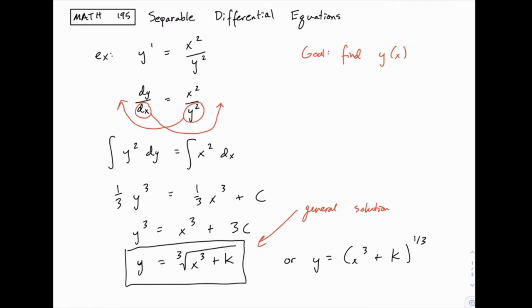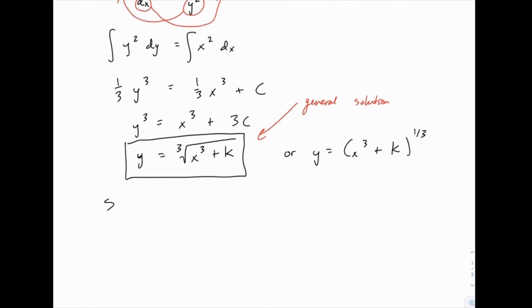Now of course once we have a general solution, we can also find a specific solution, and for that we would need an initial condition. Let's say we're given the initial condition that y of 0 equals 2.